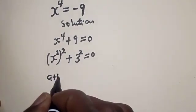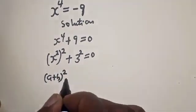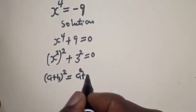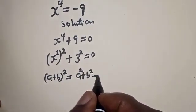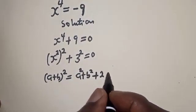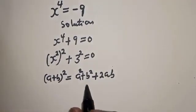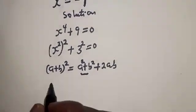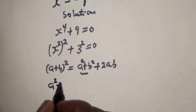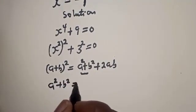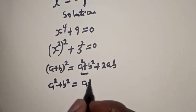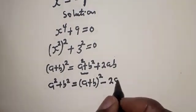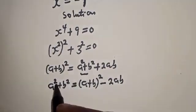Take note of the rule that if you have (a + b)² it is equal to a² + b² + 2ab. Now let's look for a² + b². Therefore a² + b² will now be equal to (a + b)² minus 2ab.